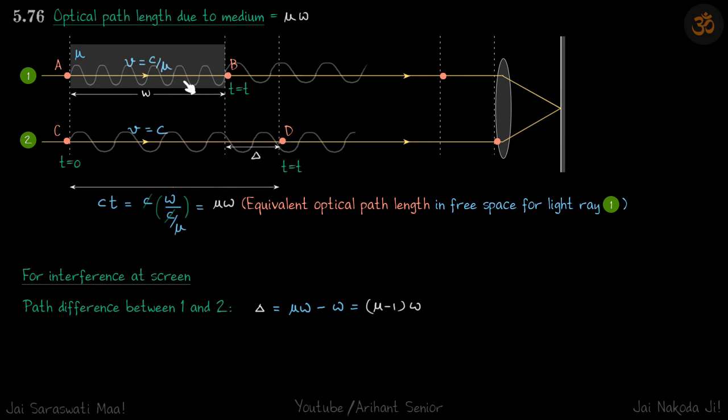Now imagine taking two points on two rays which were on the same phase before entering the medium. This ray is outside the medium. At t = 0, both points are aligned. After time t, the point outside reaches further, but the point inside the medium is traveling slow and would have only reached a shorter distance.